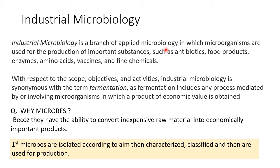Industrial microbiology is a branch of applied microbiology in which microorganisms are used for the production of important substances. From the term itself you can conclude it is related to industry and production of products — substances like antibiotics, food products, enzymes, amino acids, vaccines, and fine chemicals like organic solvents.